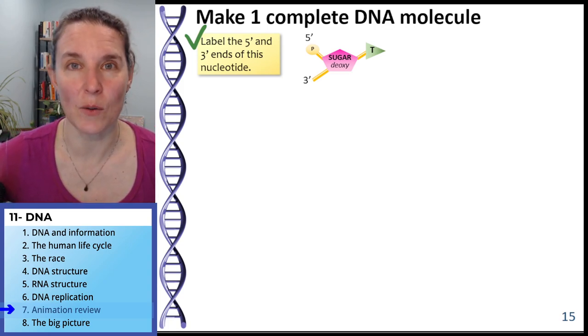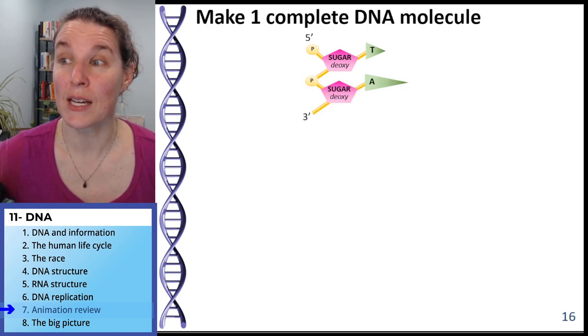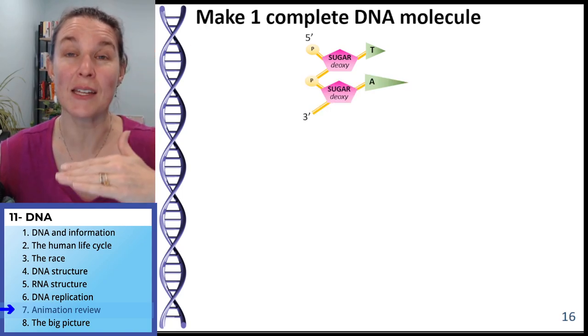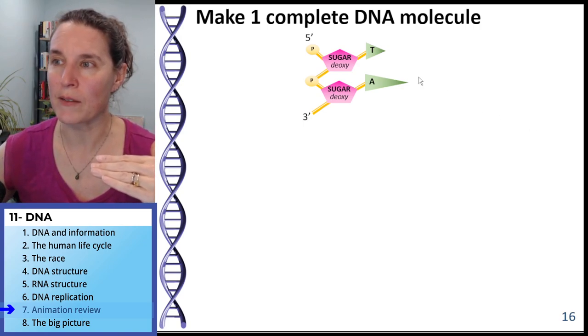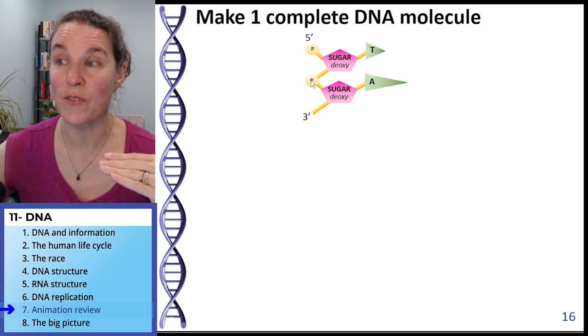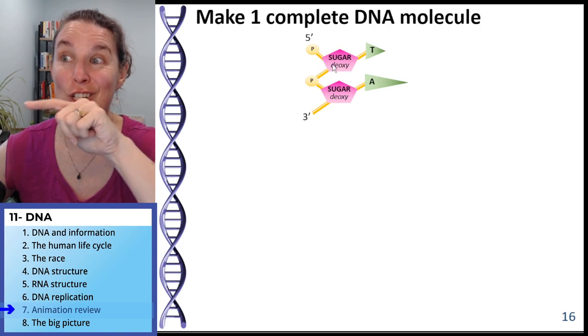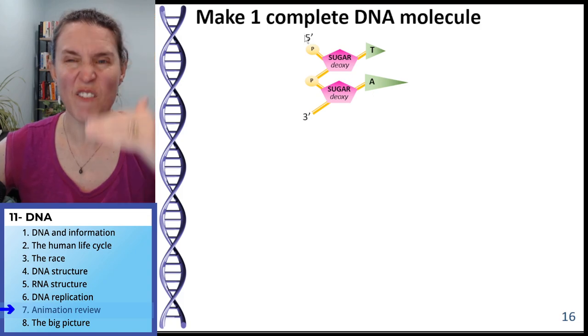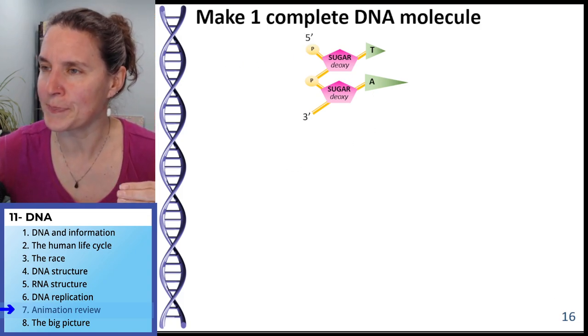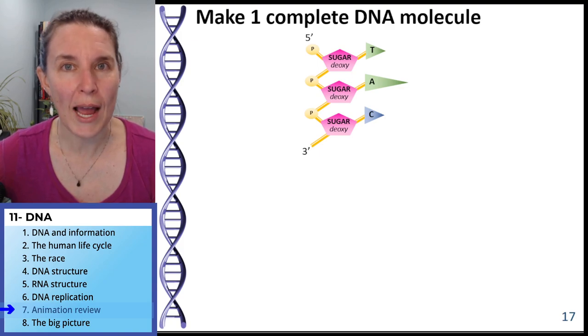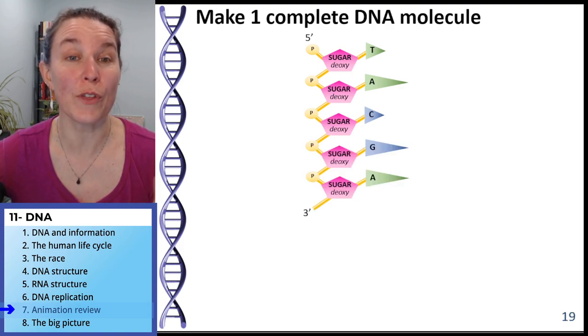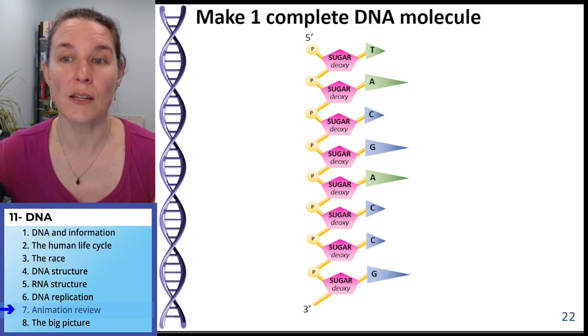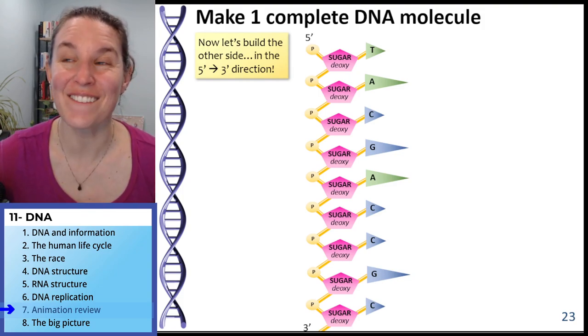Predict, where am I going to put the 5 prime and where am I going to put the 3 prime on this particular nucleotide? Did you put the 5 prime on the phosphate end? Nice work. And the 3 prime on the sugar end. Let's see. We're going to add somebody else. Check it out. Look at how the 3 prime end moved. We formed a chemical bond. We have nine of them.